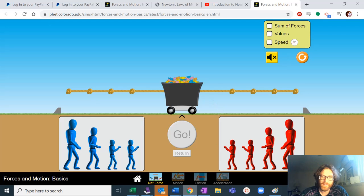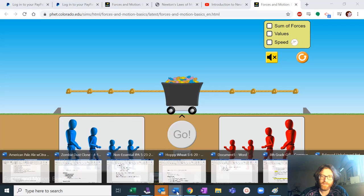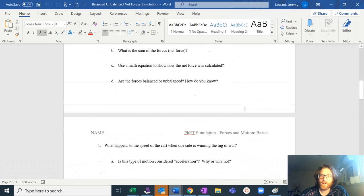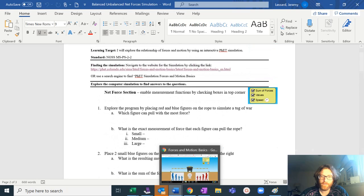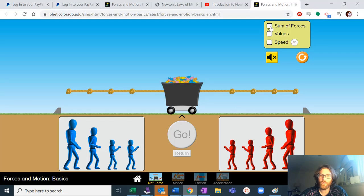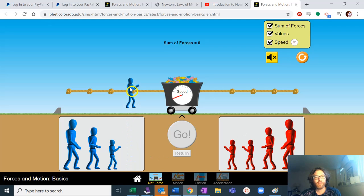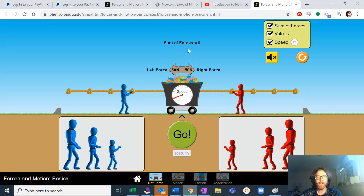What I want you to do, it's there in the document, but I want to make sure that you see it. I want you to check all those boxes right there, because I want to be able to know what the sum of the forces is. I want to know what the values of each of the people can pull, and I want to know the speed at which it's going to go. So you can see, I can put a blue guy on here and it tells me how much force he's pulling with. It tells me what the sum of the forces is. So if I put a red little guy here, some of the forces is going to be zero.